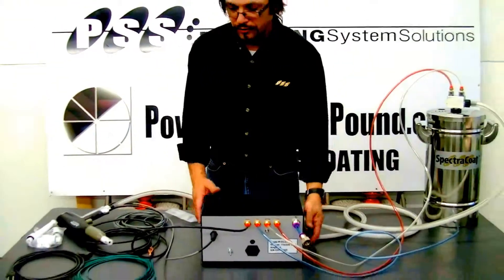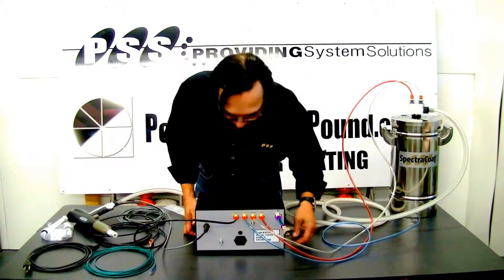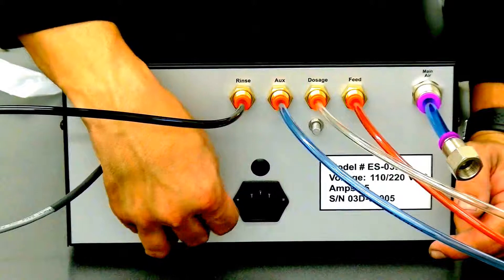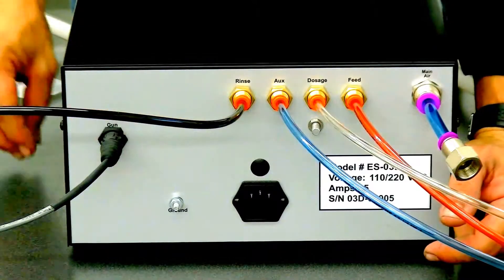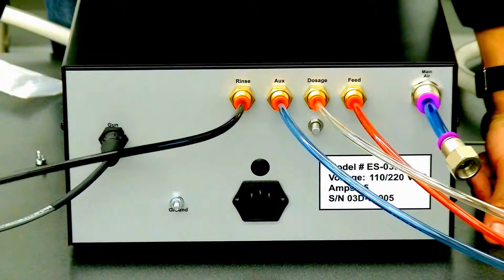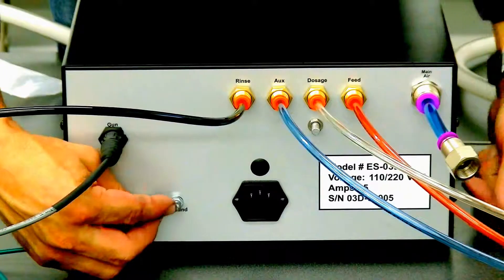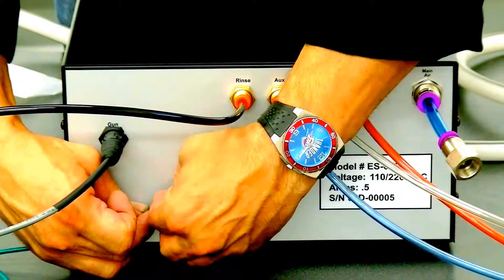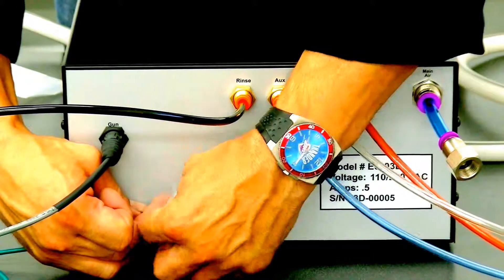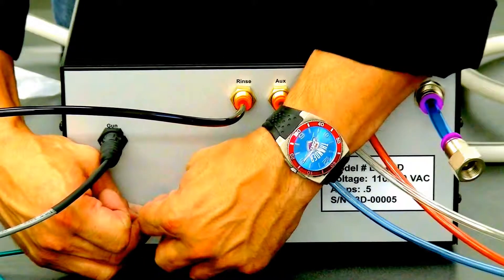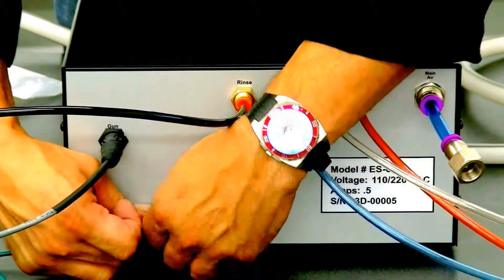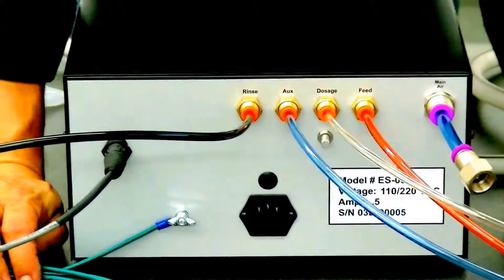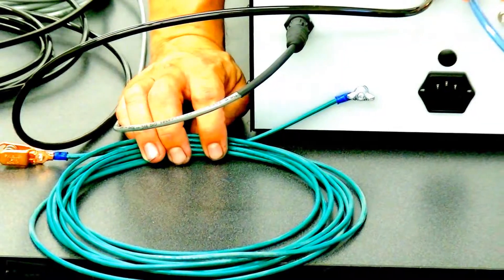Now we're going to go to the back of the unit for just a moment and make our last two connections here. We have our ground connection which we provide a wire that will go from the back of the ground here to ground the unit back to your ground rod. This grounds the unit back to the ground rod. You'll need another one that goes because we don't know what length you'll need. But another one needs to go from your ground rod to your part or your rack or your booth or whatever. How you choose to ground your parts that you're going to coat. So this wire will go to your ground rod and another ground wire from your rod to your part.